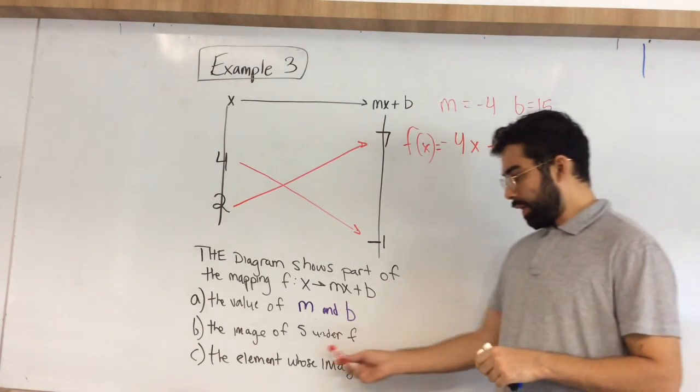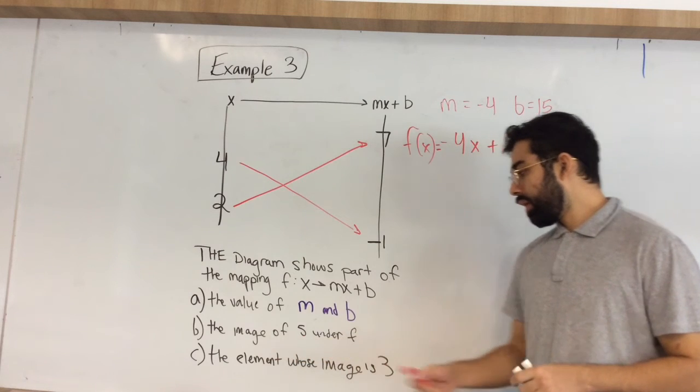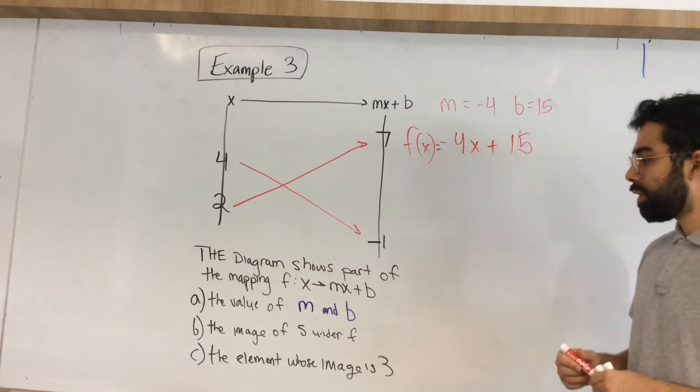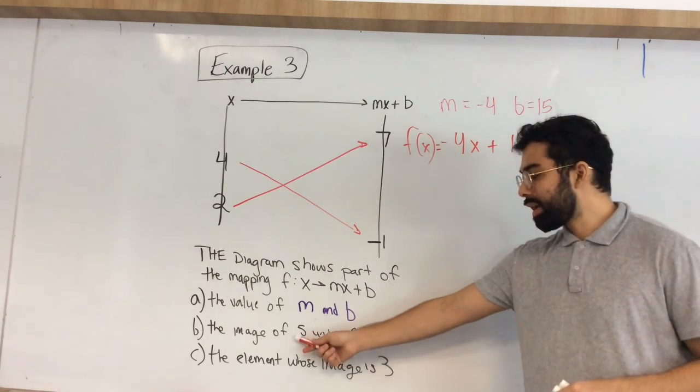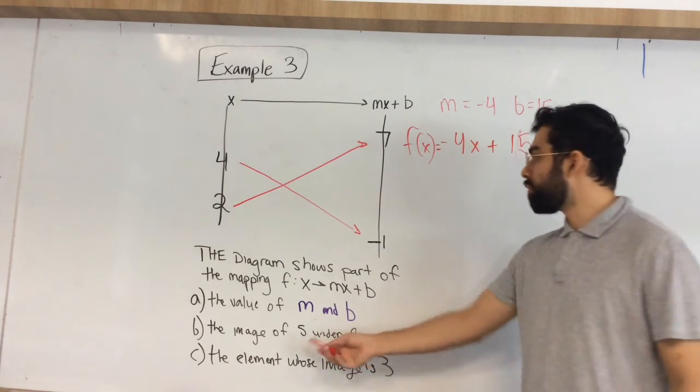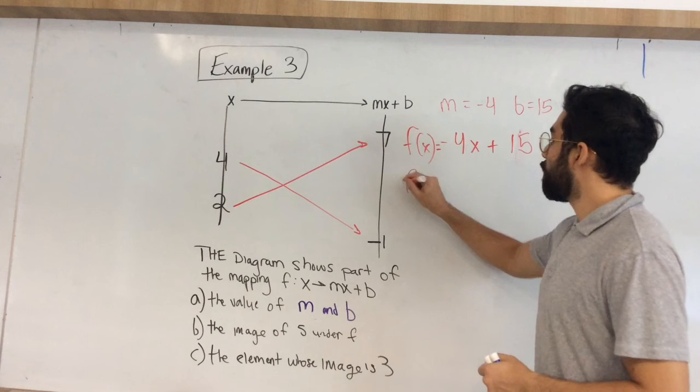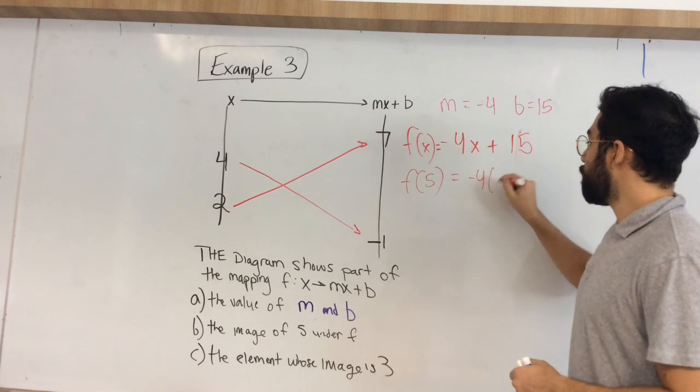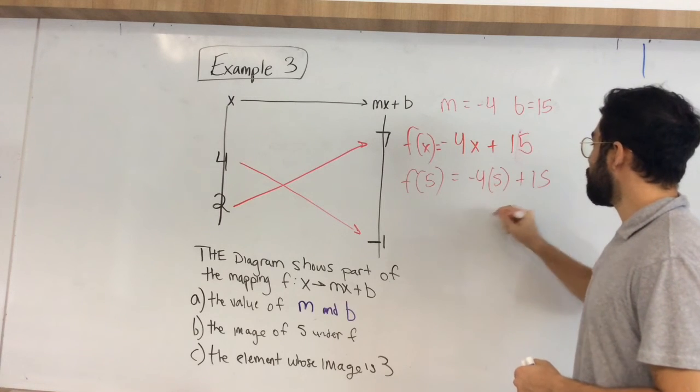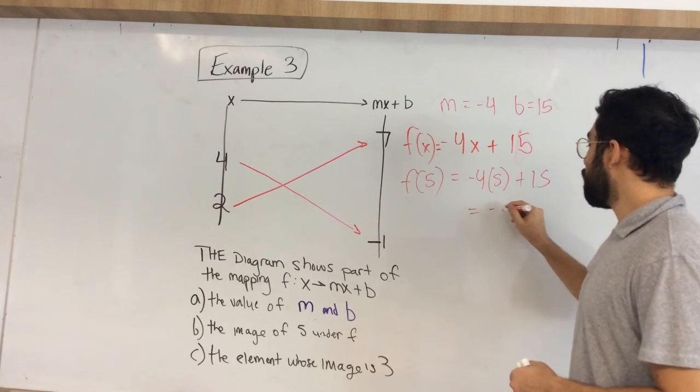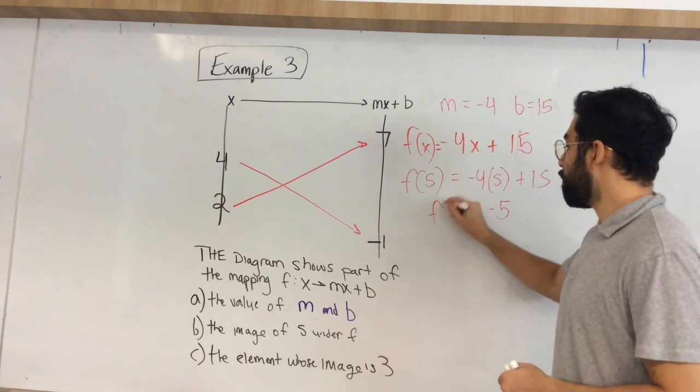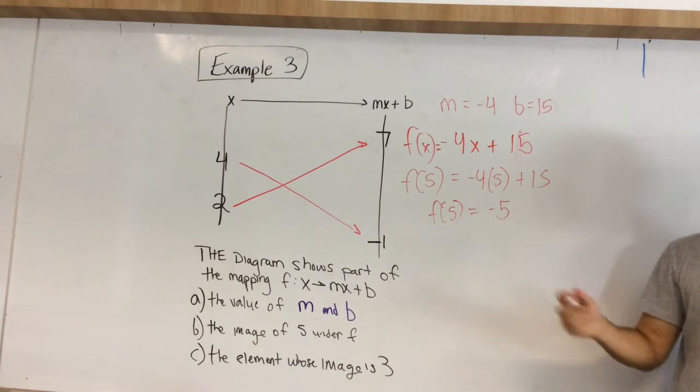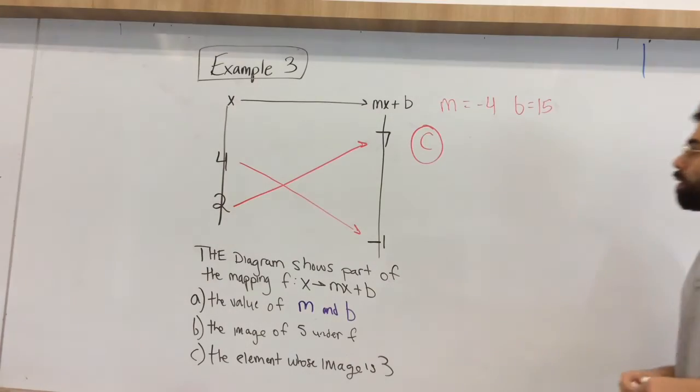All right? Your next question asks you what is the image, so the image of 5 under f. Image is not 5, but it's asking you what the image is when you input 5. So now we have f of 5 is equal to negative 4, input 5 plus 15, that would end up being negative 5. So f of 5, input 5, you get output of negative 5.